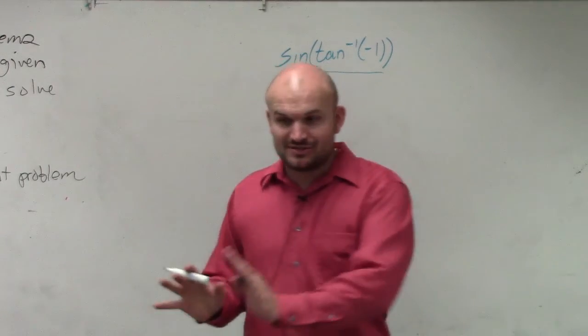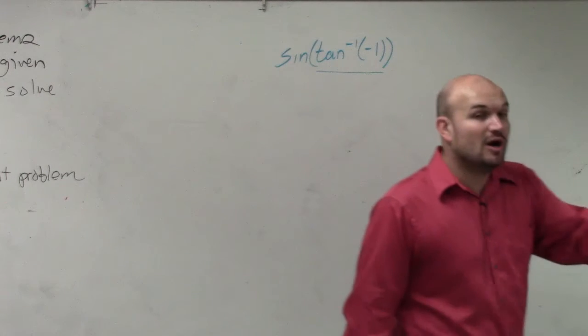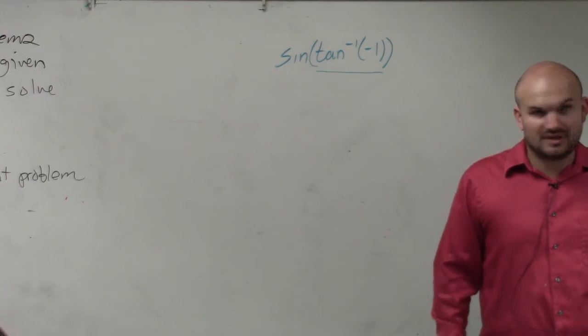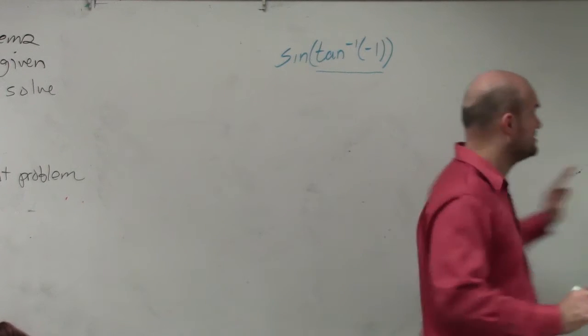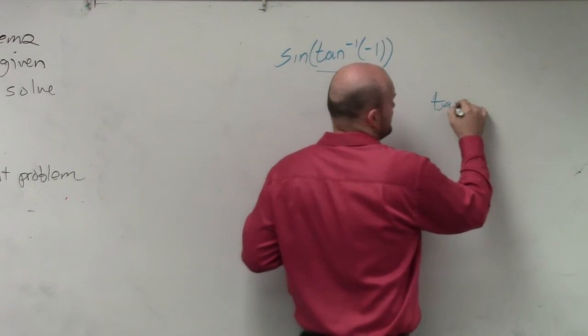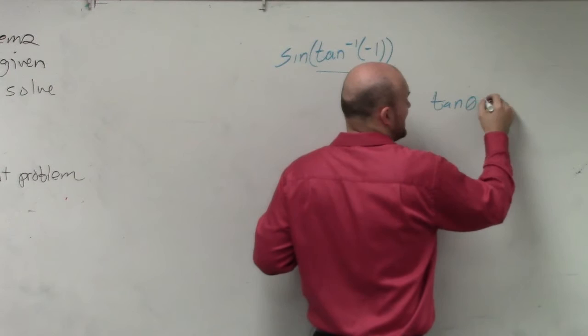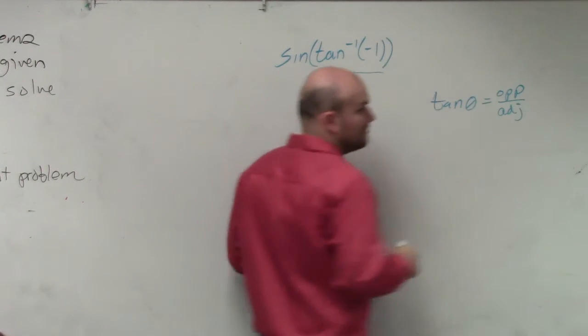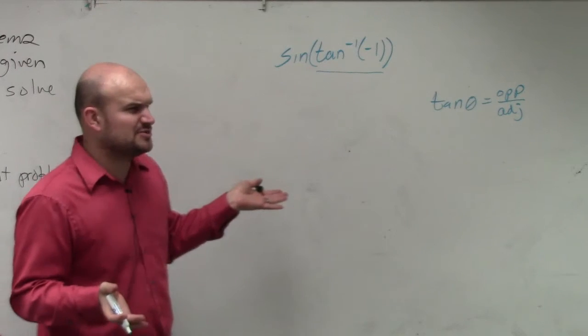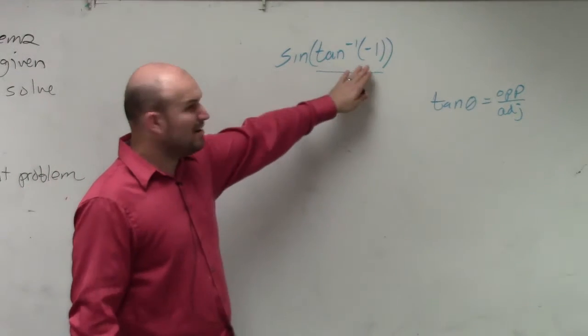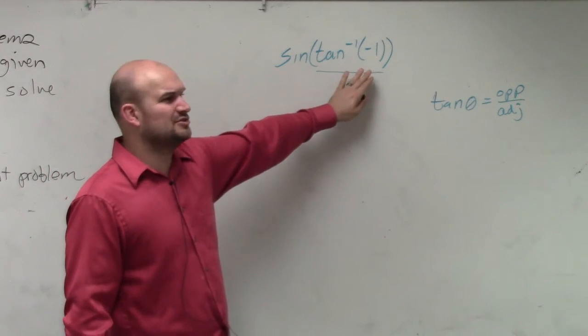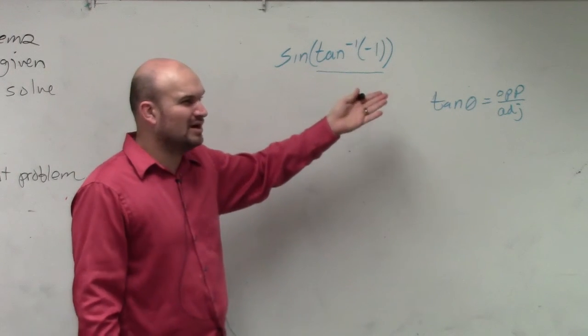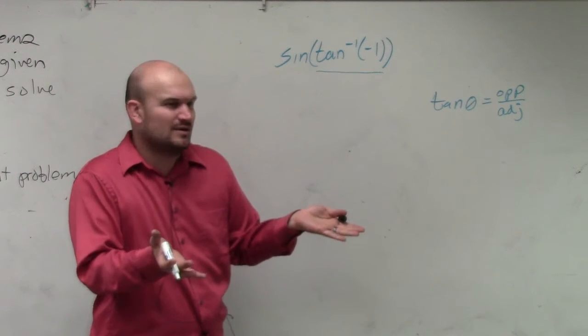To understand that, forget about the negative. Let's just look at what tangent represents. We know that tangent of an angle represents the opposite over adjacent. That's helpful, especially with the triangle. However, over here, that's really not going to do much for us because you just have a value. I could just do negative 1 over 1. That doesn't really help me out with angle.